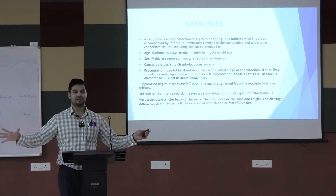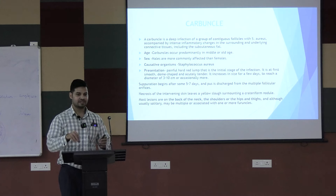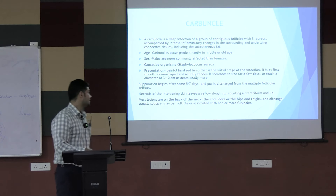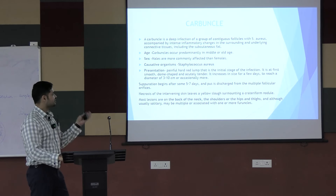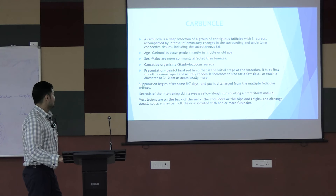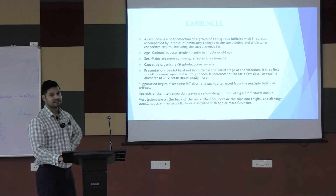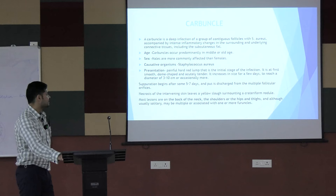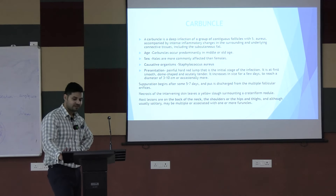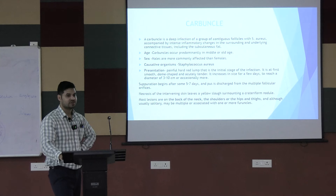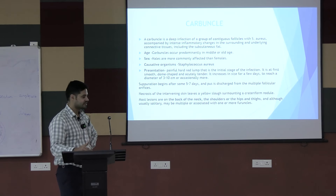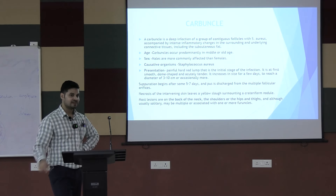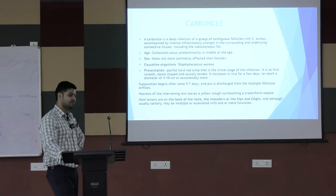A carbuncle is multiple furuncles together — a group of contiguous hair follicles deeply infected, including the subcutaneous fat. It predominantly affects middle-aged to older individuals with compromised immunity — such as diabetics, HIV patients, or those on immunosuppressants. Farmers and cement workers who have repeated trauma to their legs are also at risk. The causative organism is again Staph aureus.